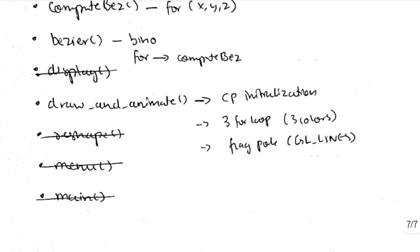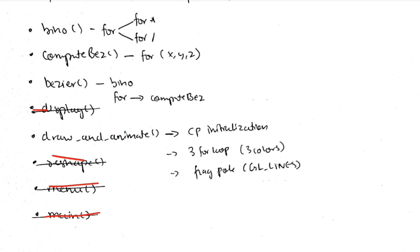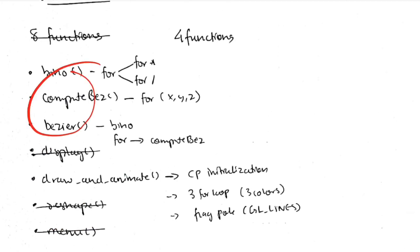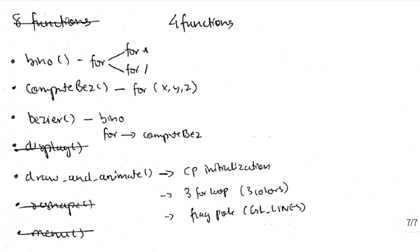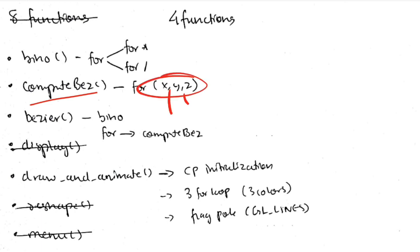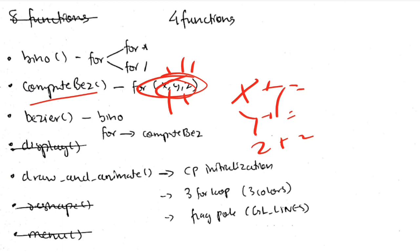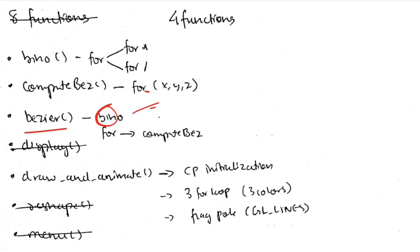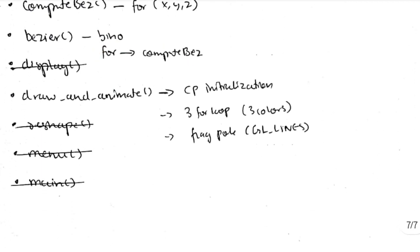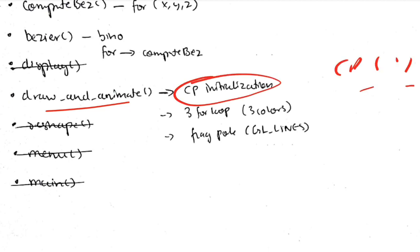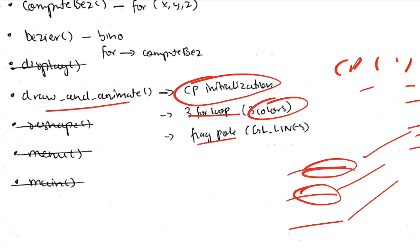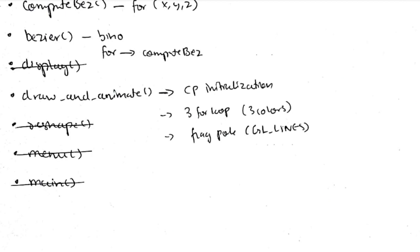For program 9 (Bezier Curve), there are 8 functions. Main, menu, reshape, and display are already covered, leaving four: b_no, compute_bezier, bezier, and draw_and_animate. In b_no, there is a for loop with multiplication and division. In compute_bezier, three for loops calculate x, y, and z values using incremental additions. The bezier function calls b_no first, then a for loop calls compute_bezier. In draw_and_animate, control point (cp) values are initialized, then three for loops draw the Bezier curves in three colors — saffron, white, and green — and a flagpole is made at the end using gl_lines with two points.